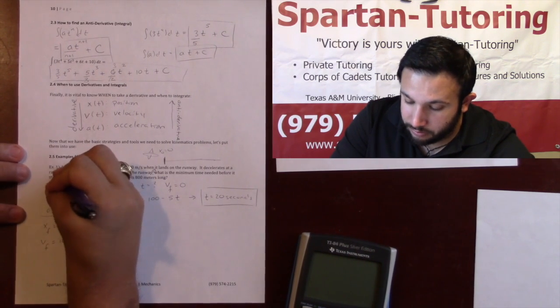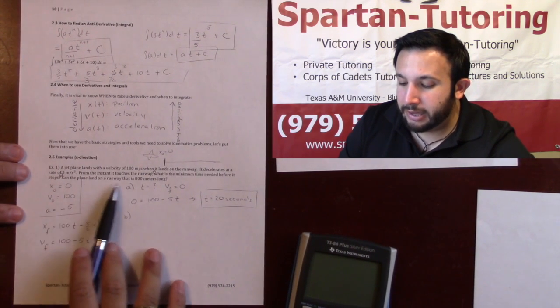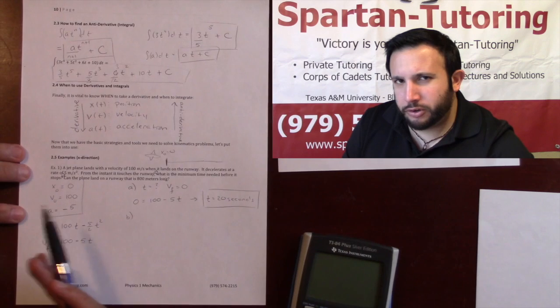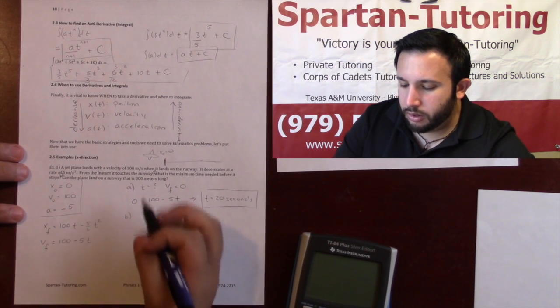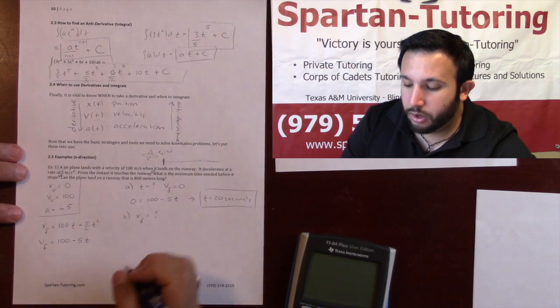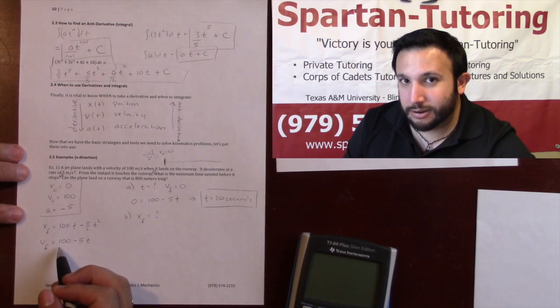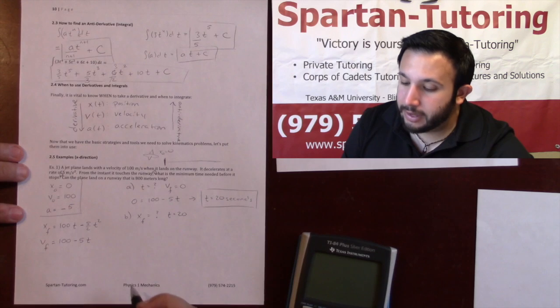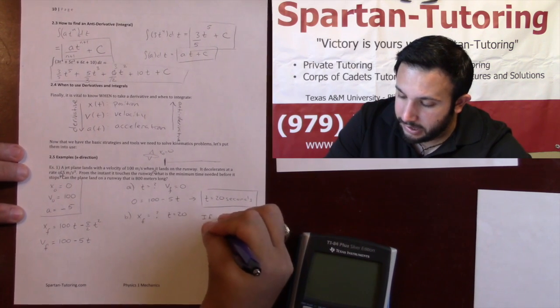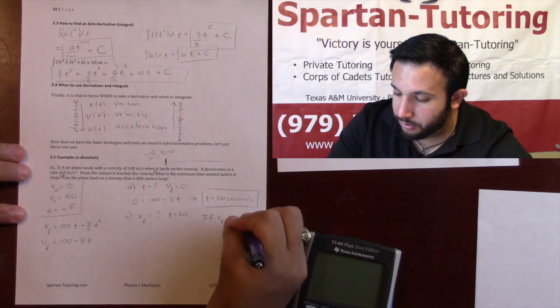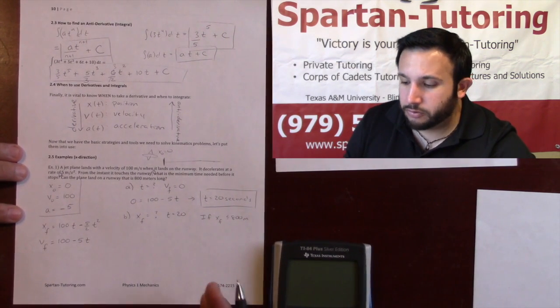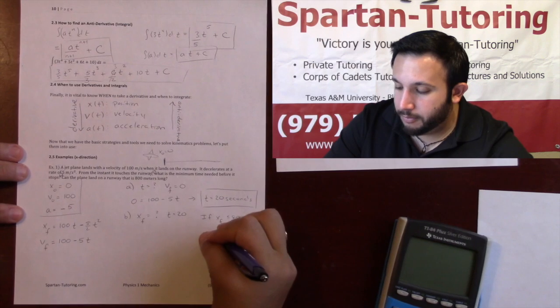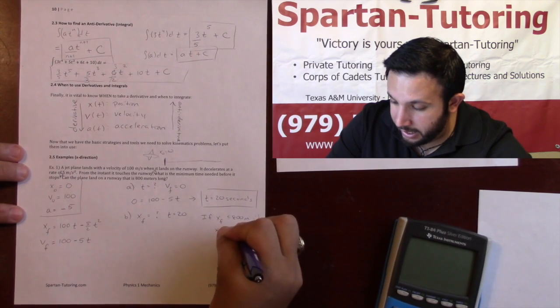Part B, the second question: can the plane land on a runway that is 800 meters long? Well, let's see how far it travels before it comes to a stop. The final position is what I'm looking for—xf is what I'm looking for when the velocity is zero. You know when the velocity is zero: after 20 seconds, you already figured that out in part A. If your final position is less than or equal to 800 meters, if it takes less than 800 meters for it to come to a stop, we're good.